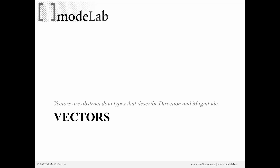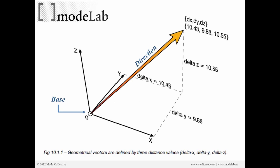Vectors are an abstract data type that describe two properties: direction and magnitude. Here's a representation of a vector — you have a change in x, y, and z as the elements that compose the vector. These are delta x, delta y, delta z. With those values, you can understand the direction from the base point to the tip, as well as the magnitude, which is how long the vector is.